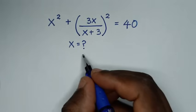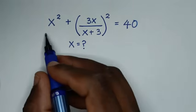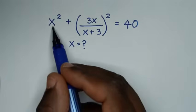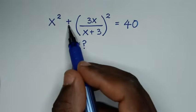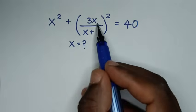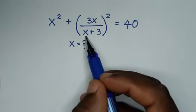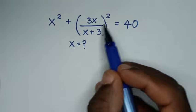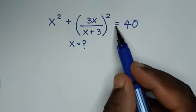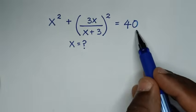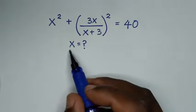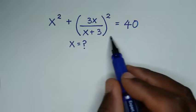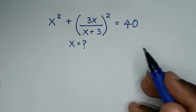Hello, you are welcome to solve this math problem, which is x squared plus 3x over x plus 3, all in bracket squared, is equal to 40. We need to find the values of x from this equation.